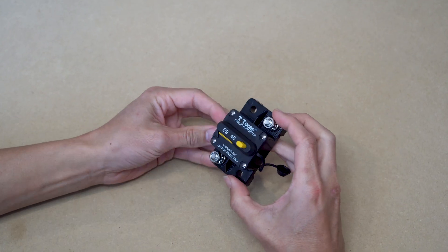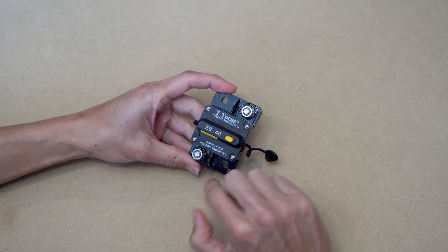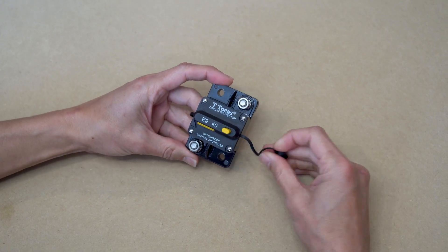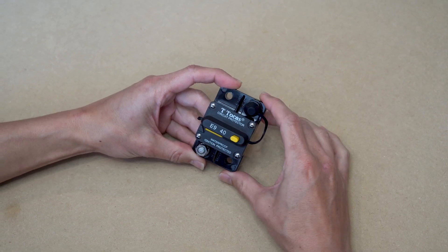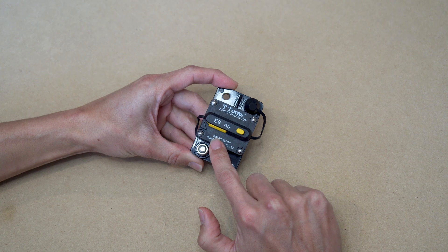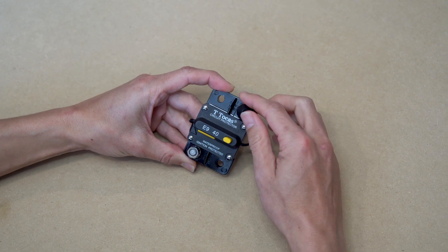This is what the breaker looks like. You've got your terminal posts to attach to your hot wire, and you've got these post caps for protection. In the event of an overcurrent situation, this yellow tab will pop out and break the circuit to cut the flow of power.